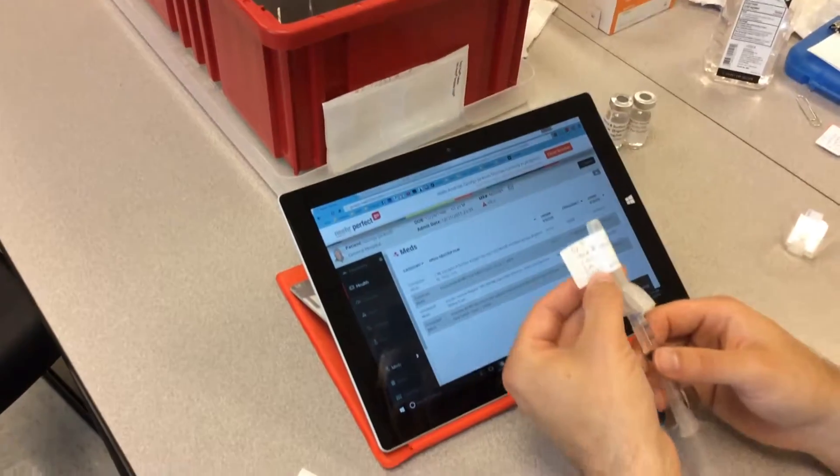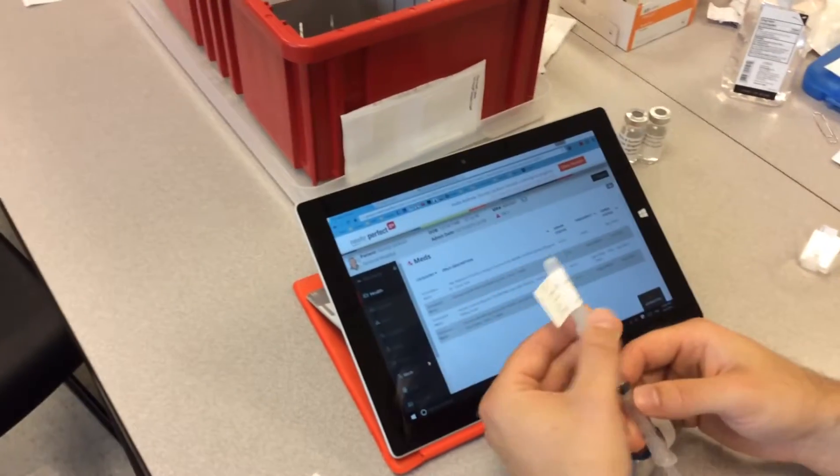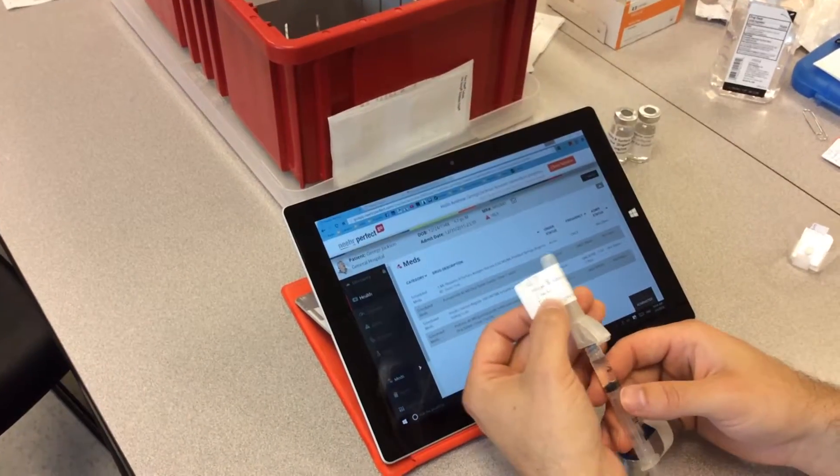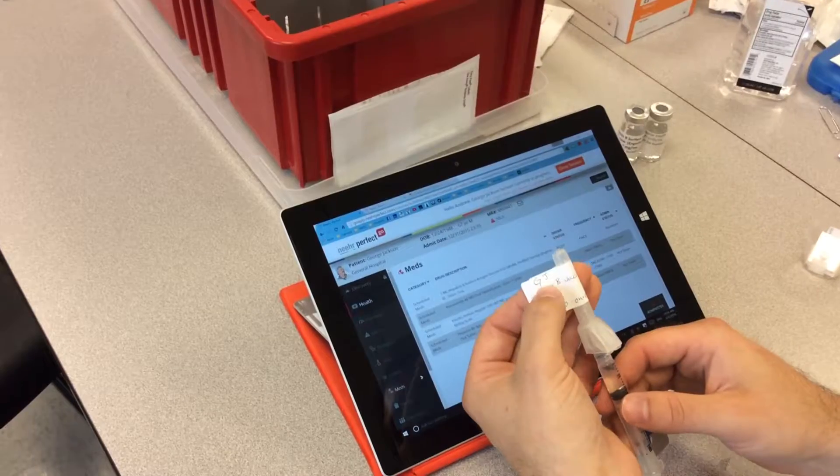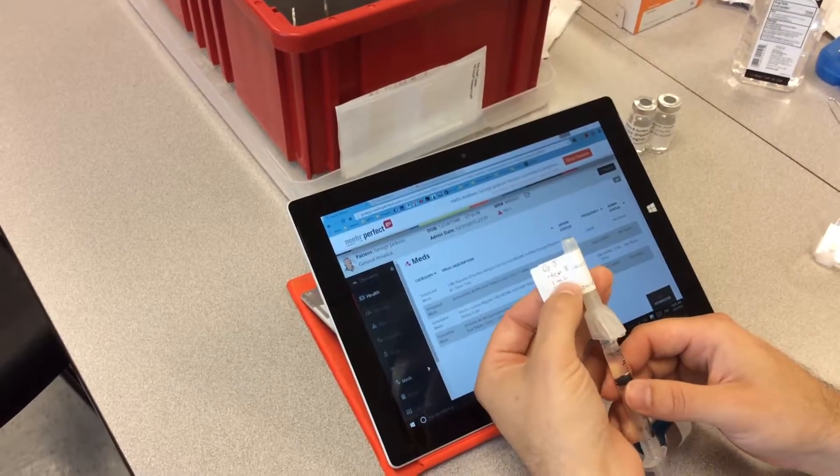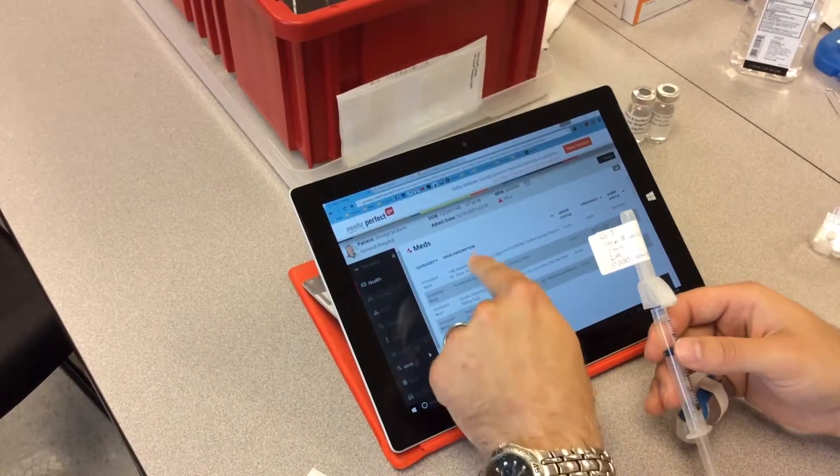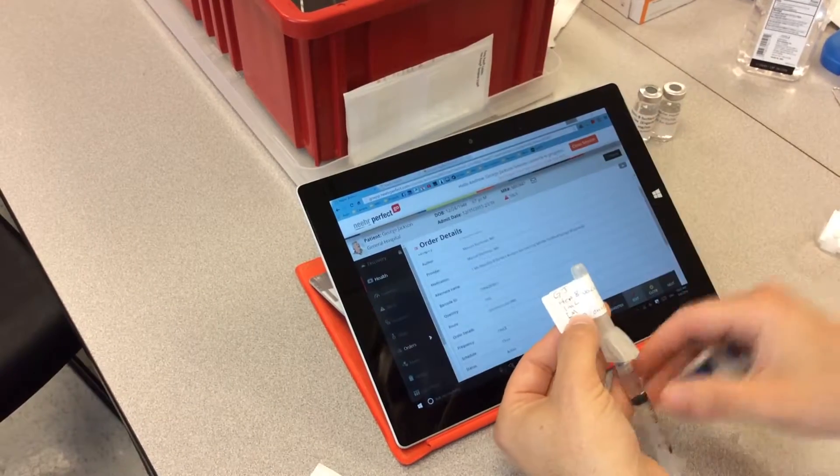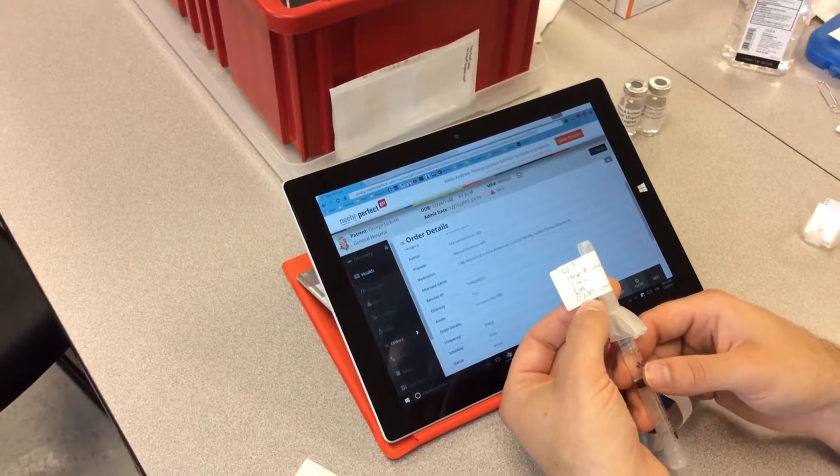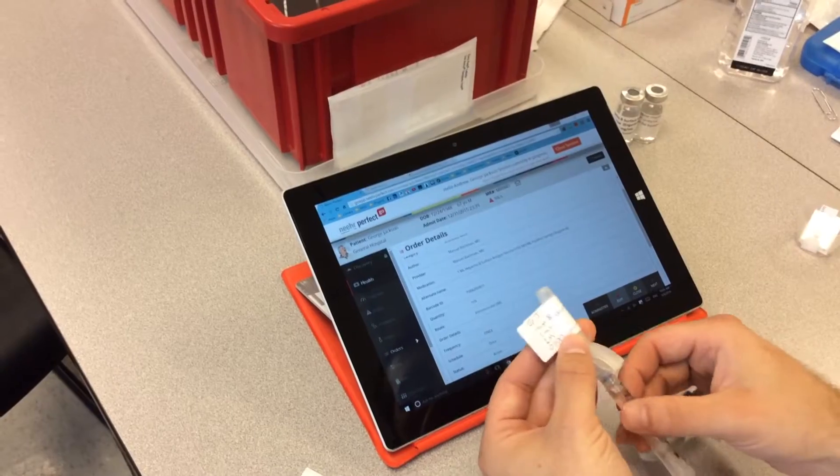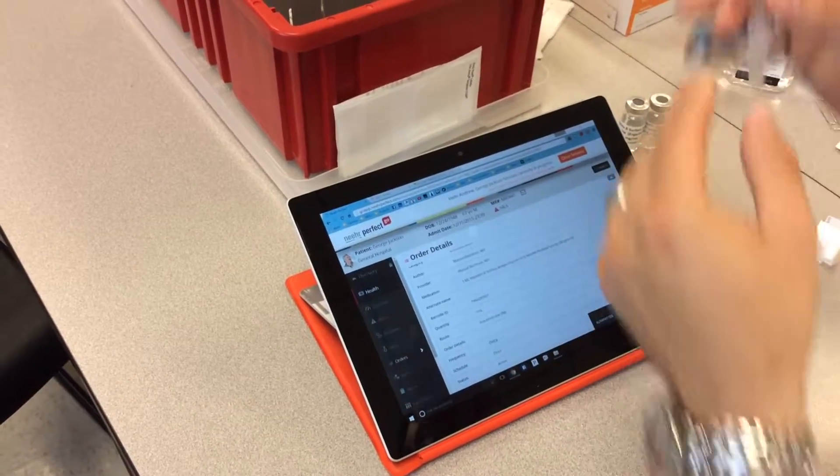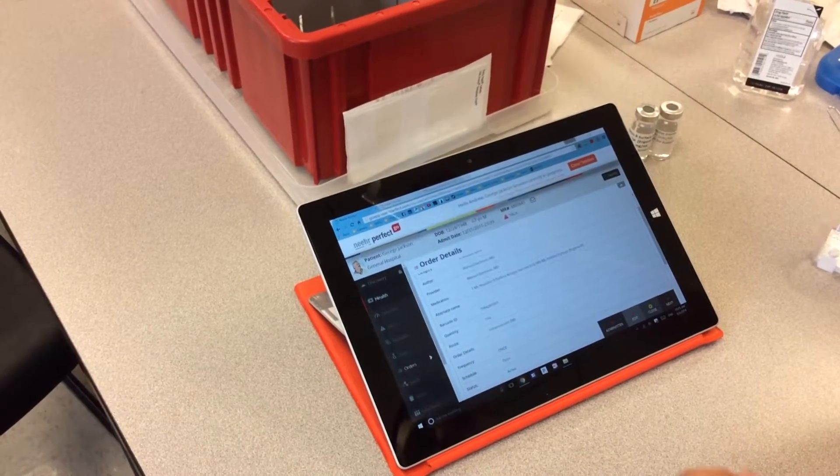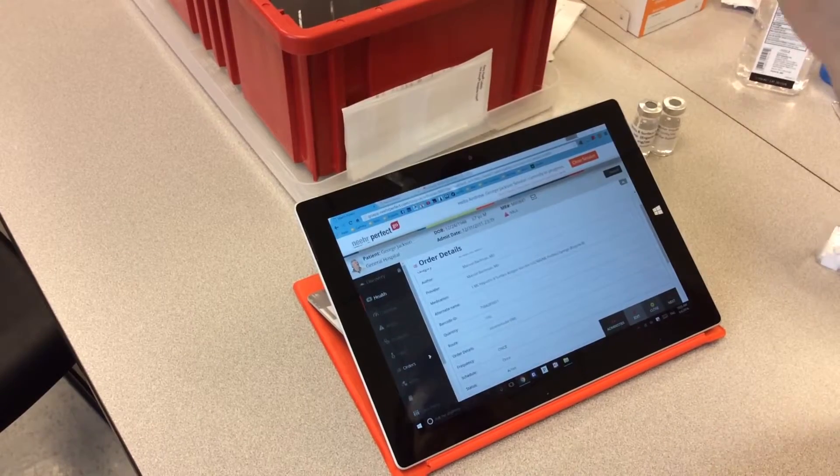I'm going to check the hepatitis B surface antigen vaccine. George Jackson, Hep B vaccine. One milliliter is the dose, intramuscular, 0700 once. And it looks like I've got it at one milliliter, which is what it calls for here. So that's correct.